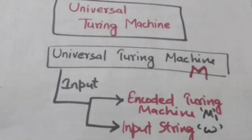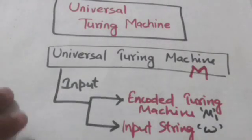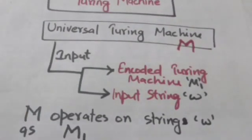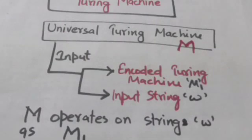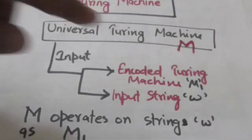There is a general purpose Turing machine called Universal Turing machine whose input consists of two parts. First part is the encoded Turing machine followed by a marker, and second part is the input string of the Turing machine encoded in the first part.